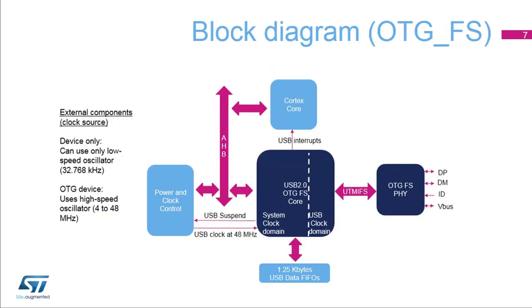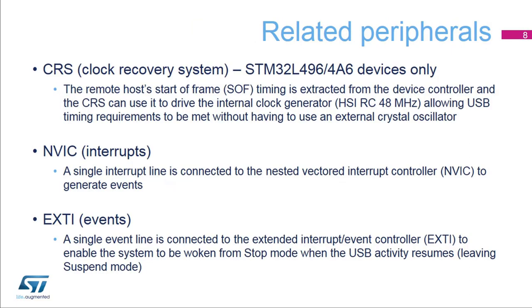In this block diagram, the full-speed OTG USB controller core is shown in the center with its data FIFOs below. The physical layer, or PHY, on its right side, handles the analog signal levels, including many specific level detections relating to OTG and battery charger detection functions. The USB interrupt goes to the Cortex processor to signal various USB events. The AHB peripheral bus enables read-write access of the controller registers and the power and clock control block. Several related peripherals work in conjunction with the USB device controller to link the USB activity to the system power mode and software requirements.